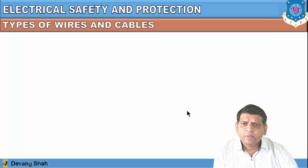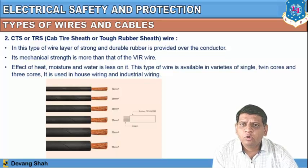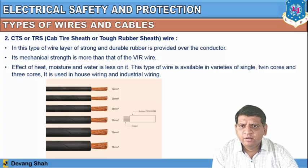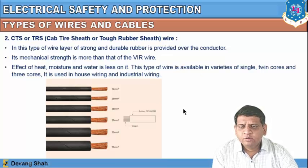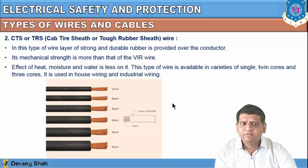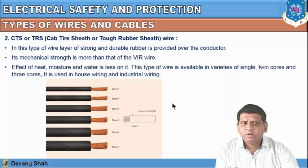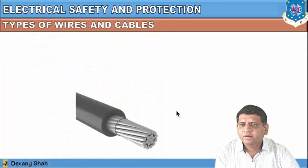Another type is CTS or TRS — cab tyre sheath or tough rubber sheath wire — where a layer of strong and durable rubber provides greater mechanical strength than VIR wire. The effect of heat, moisture, and water is less on it. This type is available in single, twin core, or multi-core varieties and is used in house wiring and industrial wiring.